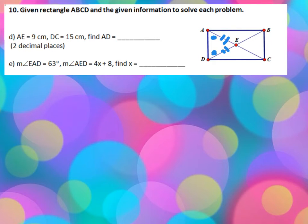Well, a rectangle has congruent diagonals, and they bisect each other. And then the last thing is they tell us what AED is, which is the vertex angle. They tell me that it's 4x plus 8.